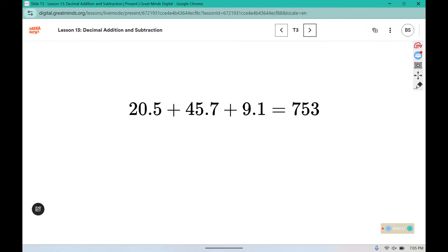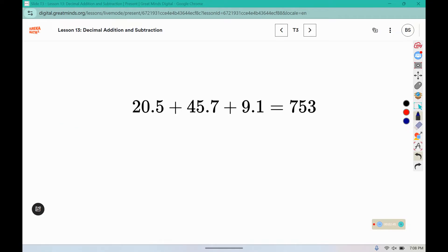We could change the sum. Notice these numbers, 205 became 20.5, and 457 changed to 45.7. So we need to change the sum to match the change in the place values. We changed all the hundreds to tens and all the ones to tenths. So we're going to move the place value over one spot as well for the sum.